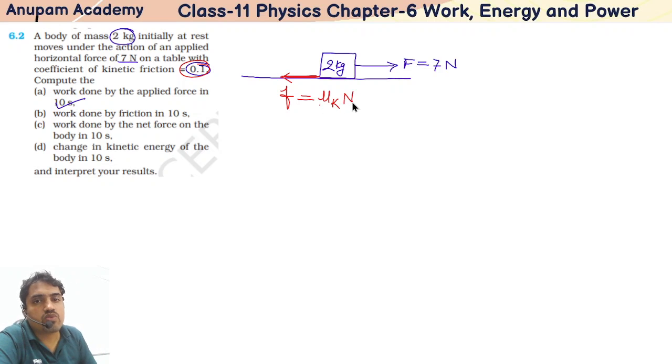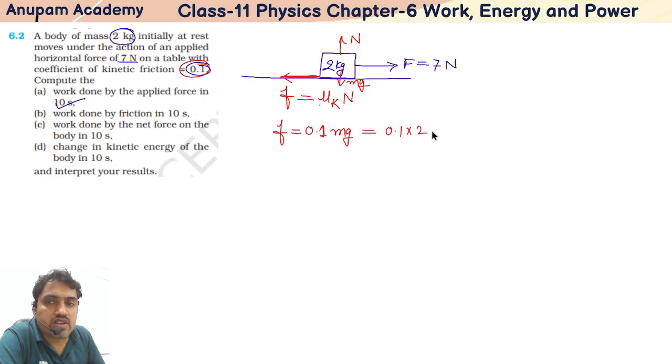This friction force is mu_k into N. Coefficient of friction into normal reaction. But in this case, normal reaction is equal to the weight mg. So this friction force equals 0.1 into mg, that is 0.1 into 2, and g we can take as 10. So this friction force will be 2 Newton.